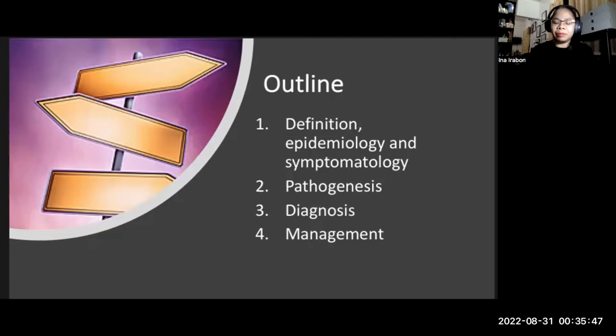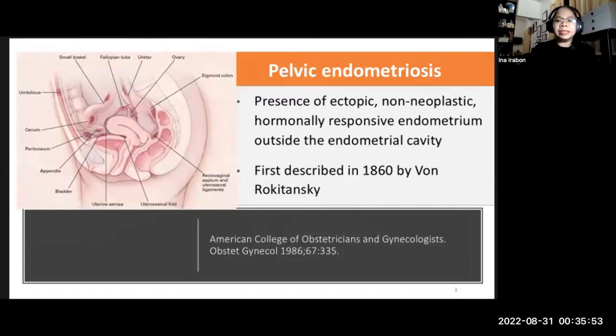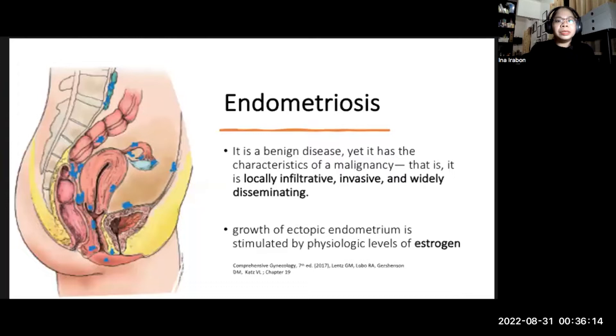Endometriosis is defined as the presence of functional endometrial tissue — that's glands and stroma — outside the endometrial cavity. These ectopic islands of endometrium are functional, non-neoplastic, and hormonally responsive. This condition was first described in 1860 by Von Rokitansky. It is a benign disease, yet it has the characteristics of a malignancy because it is locally infiltrative, invasive, and widely disseminating. The growth of ectopic endometrium is stimulated by physiologic levels of estrogen.